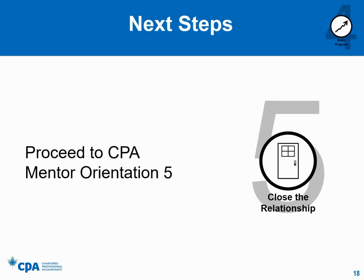Now that you know how to make progress in your mentoring relationship on an ongoing basis, you are ready to proceed to the fifth and final segment of the orientation, entitled Three Steps to Closing the Mentoring Relationship.